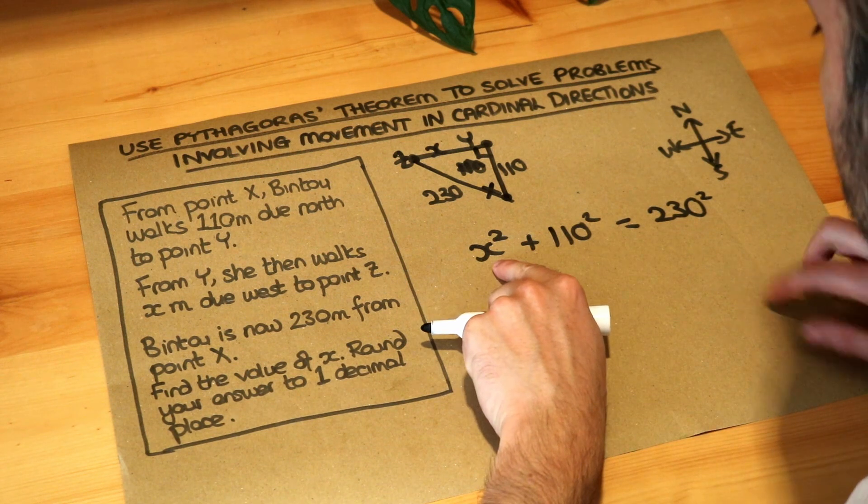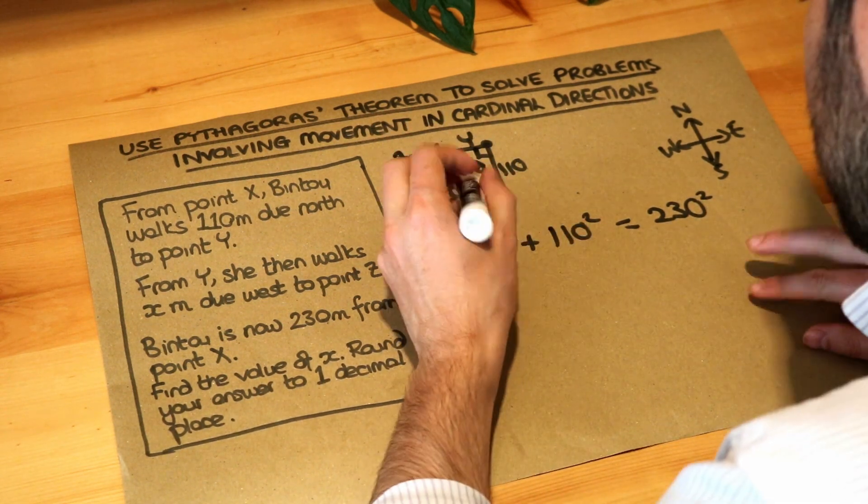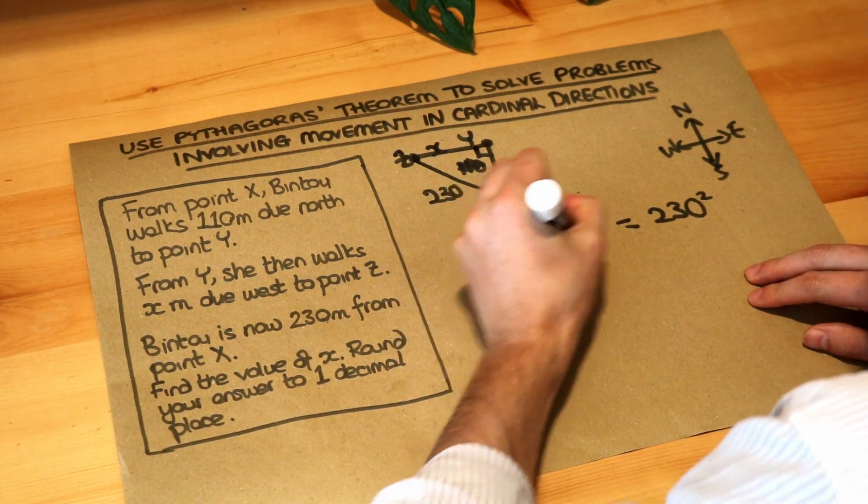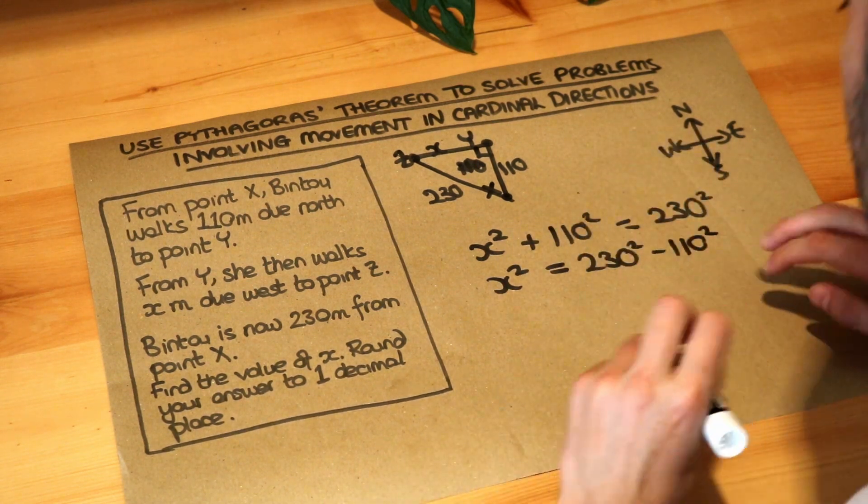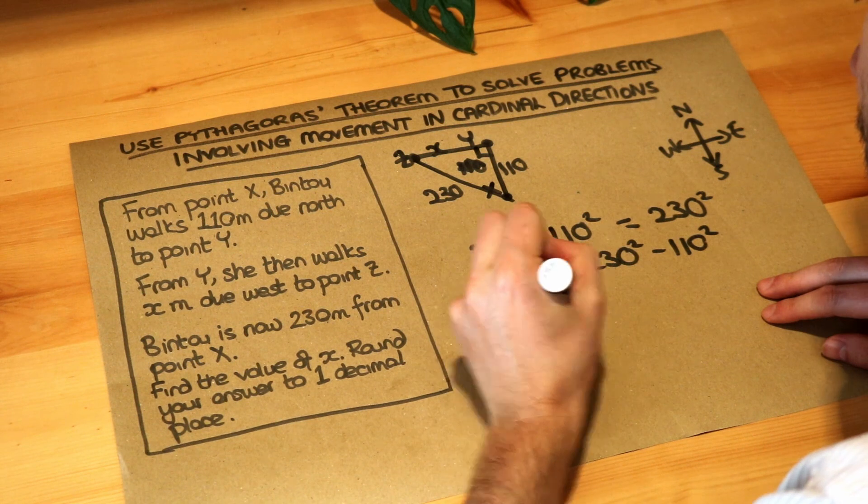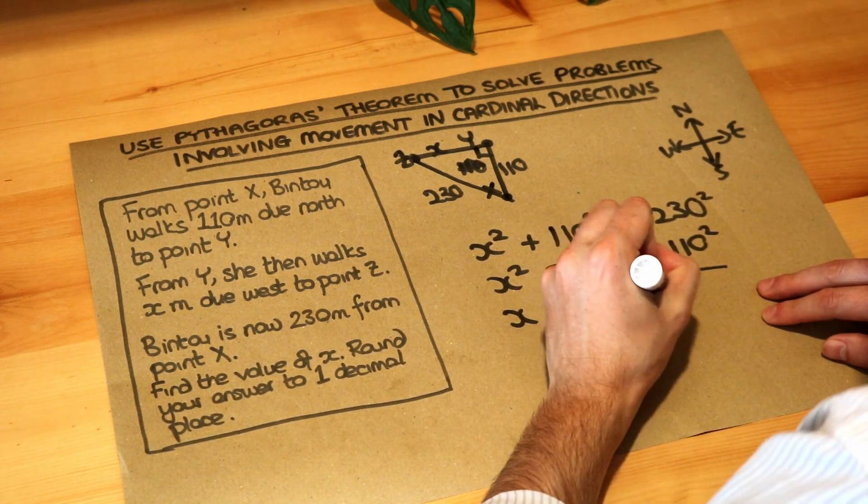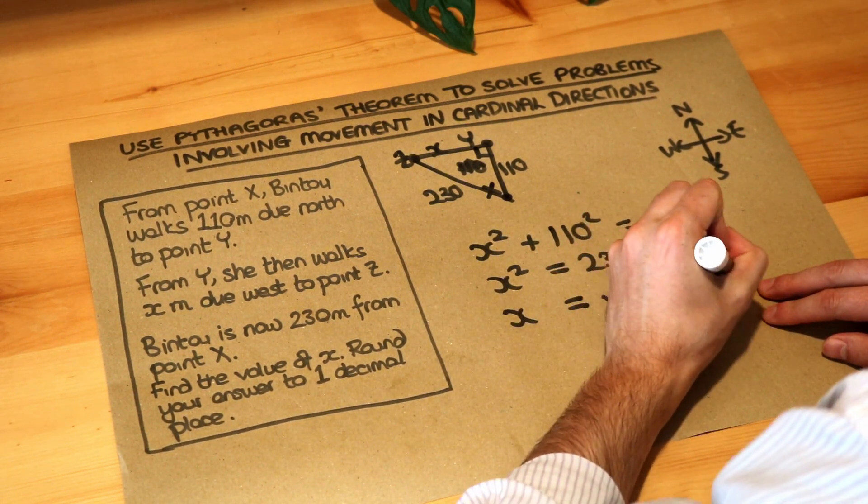So to get x on its own we subtract 110 squared. So x squared is 230 squared minus 110 squared. Then we're just going to square root both sides. So x is the square root of 230 squared minus 110 squared.